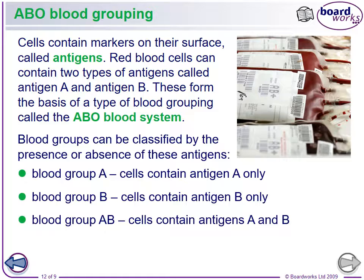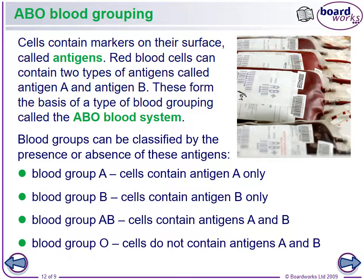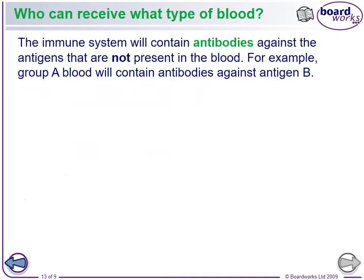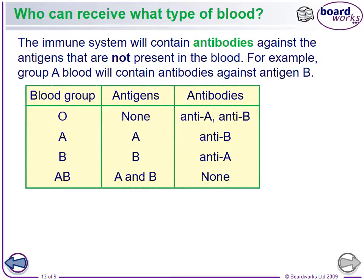Blood group A contains antigen A and will clot if given B blood. Blood group B cells contain antigen B only and will clot if given A blood. Blood group AB contains both antigens A and B — that's actually a better blood type even though it's rare. Blood group O does not contain any antigens.